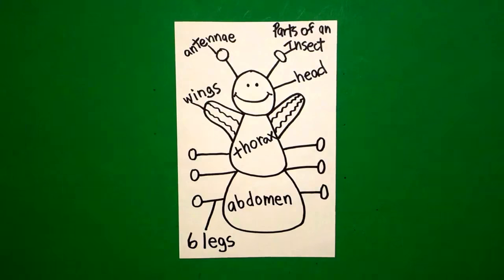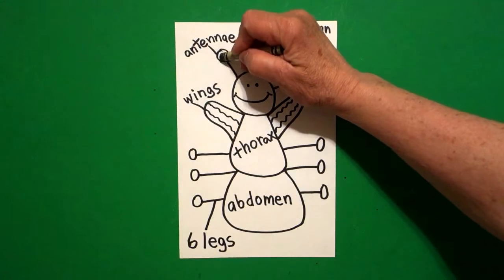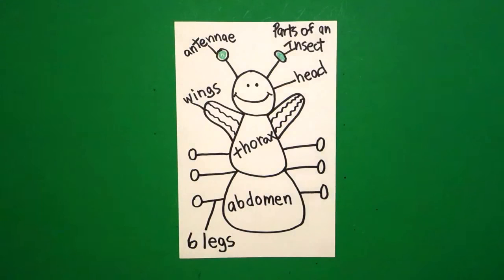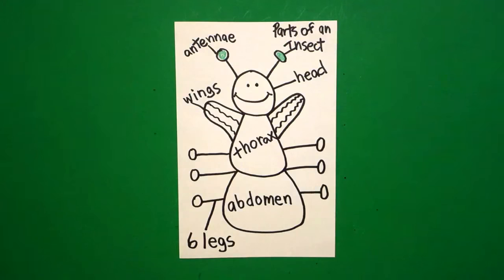Let's see how we're going to color this in. You just spent all this time drawing and labeling your insect so you don't want to color it so dark you can't see what you just wrote. So the first thing I'm going to start with my antenna and I'm going to make those green.